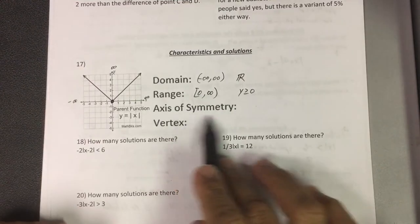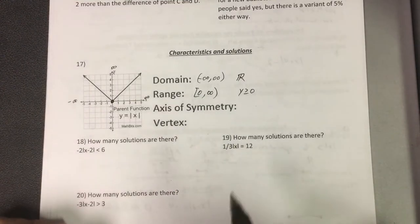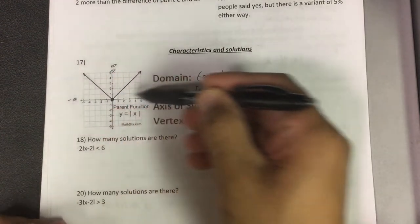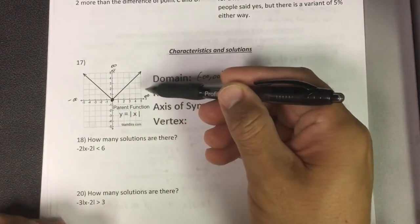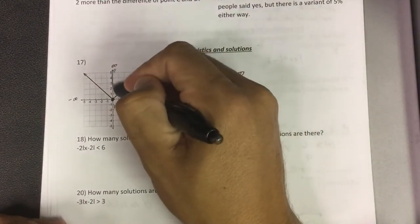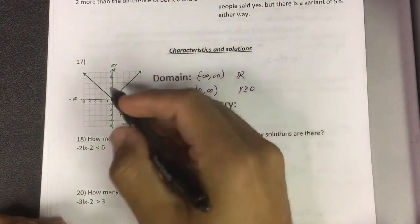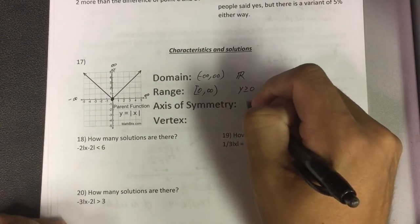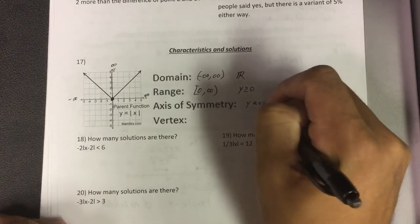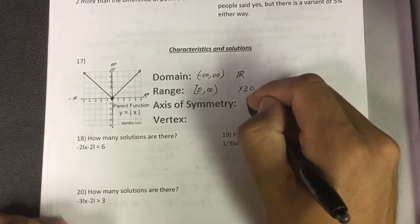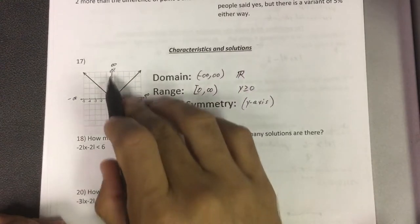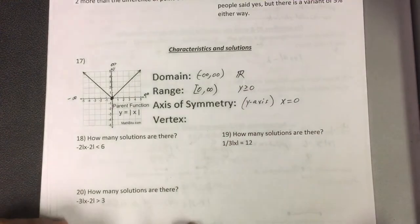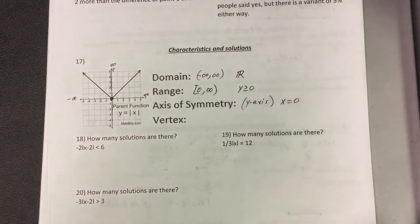What is an axis of symmetry? Symmetry is something that cuts it in half. It looks exactly the same on both sides. So if I was going to cut this in half, I cannot cut it this way because it's not the same on both sides. I have to cut it up and down right here on the axis. So the axis of symmetry is the y-axis. What's another way you could say y-axis? The equation x equals zero.